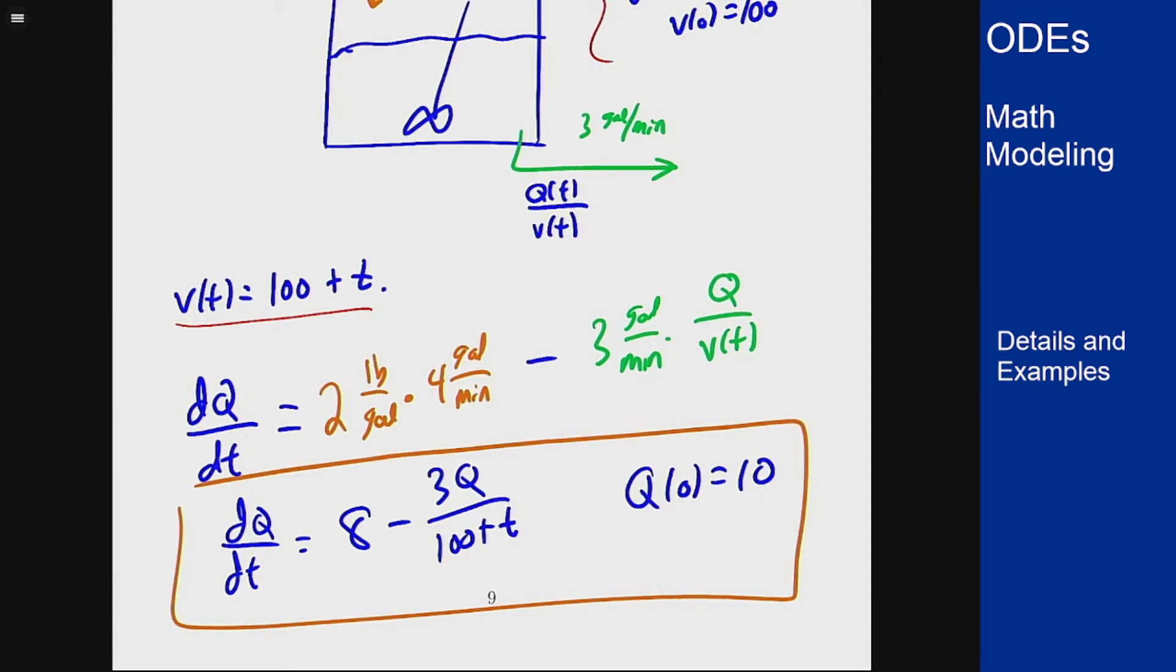Next we want to solve for Q(t) here. To do that is a first order linear equation so let's go to those methods see what we can come up with.